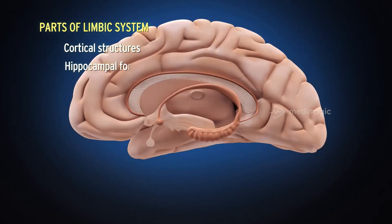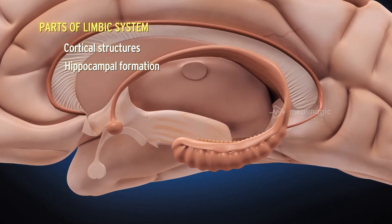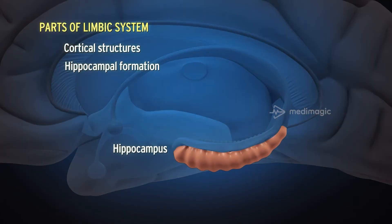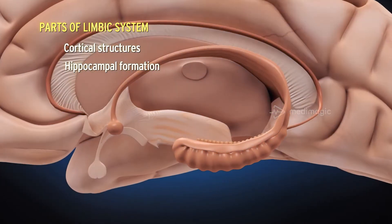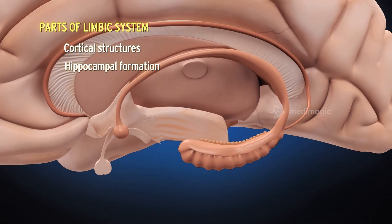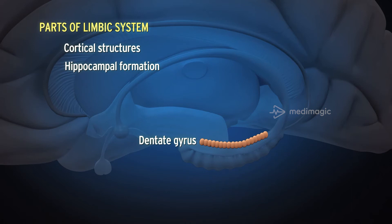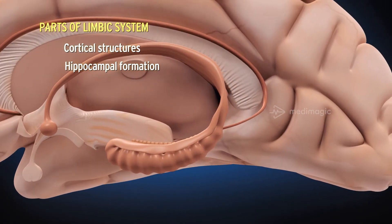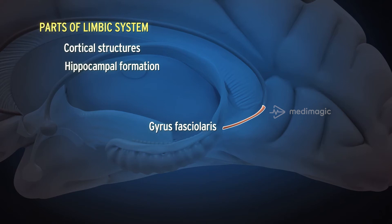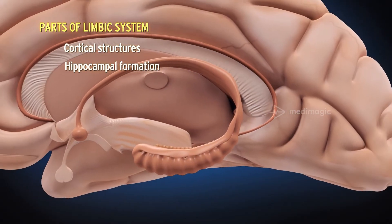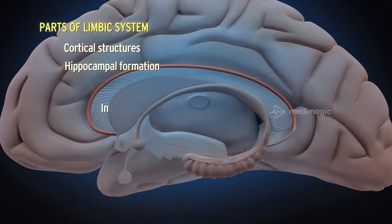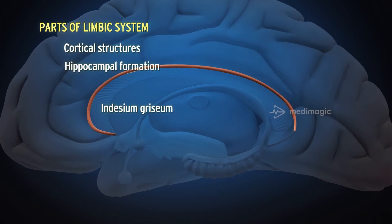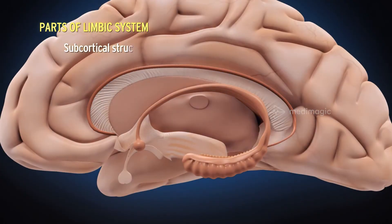The hippocampal formation consists of the hippocampus, dentate gyrus, gyrus fasciolaris, and indusium griseum.